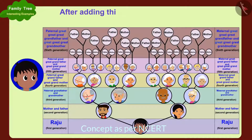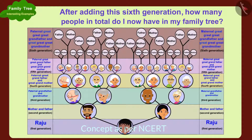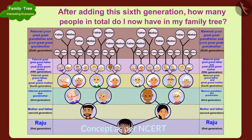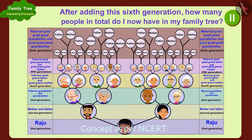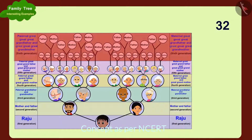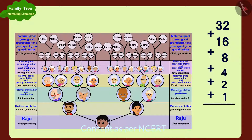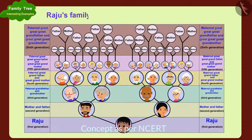Raju then asks: after adding the sixth generation, how many people in total are in his family tree? To find out, we write down the number of people in every generation and add them all together. In this way, Raju's family tree has a total of 63 people.